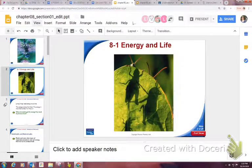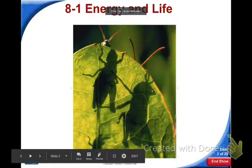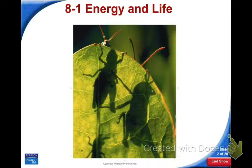Opening up our PowerPoint here. This starts off with a picture of a leaf with a grasshopper on it — what connection do you make? The grasshopper gets its energy by eating the leaf. So the grasshopper gets its energy by eating the plant, and there's a connection between photosynthesis and that other energy process — cellular respiration.